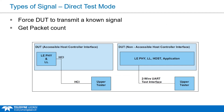Another essential requirement is the direct test mode, or DTM. This allows control of a product's transmitter to run transmitter tests and provides a packet count to verify how many packets the product correctly receives — the only way to test the receiver. The DTM allows connection either over HCI or through a 2-wire UART test interface.